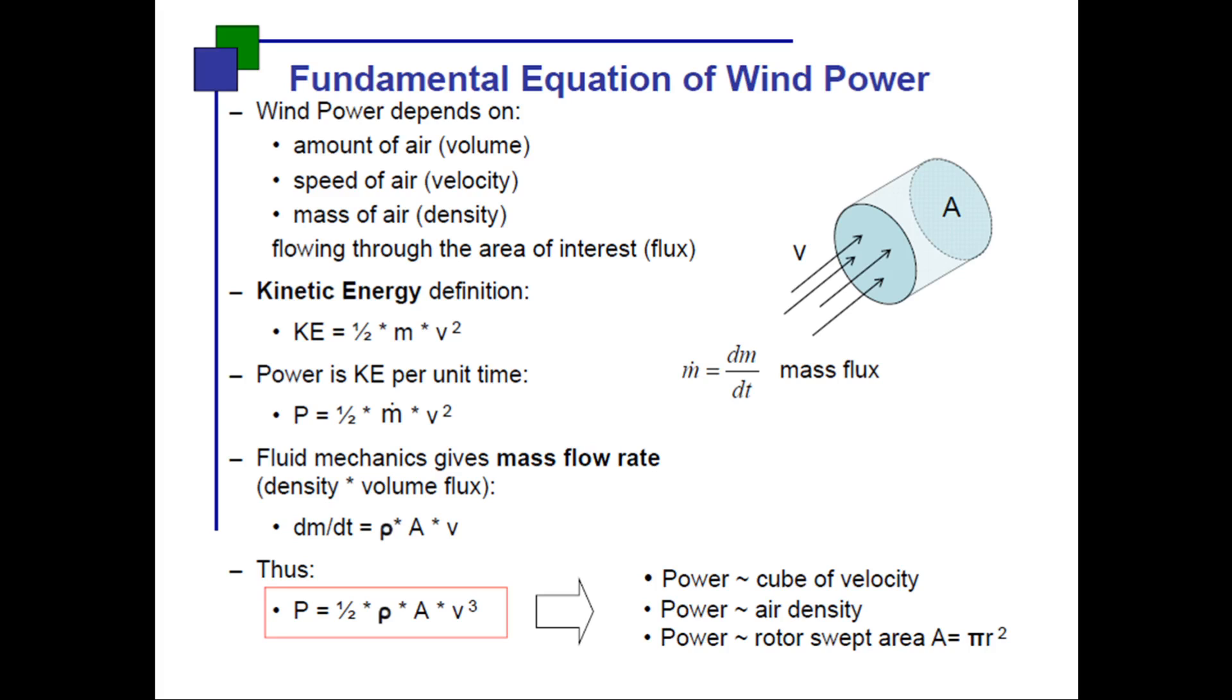It depends on the amount of air, speed of air and mass of air - how much volume of the air is falling on the surface of the blade, at what velocity is it coming, and how much density air is having. Mass per volume is density. Kinetic energy, you know, is half mv squared - mass of air and velocity of air. Power is kinetic energy per unit time. Here m dot is mass flowing per unit time, the mass flux dm/dt. Mass flow rate as per fluid mechanics as we have studied in third semester is rho into A into v - density into area through which it is flowing into velocity.